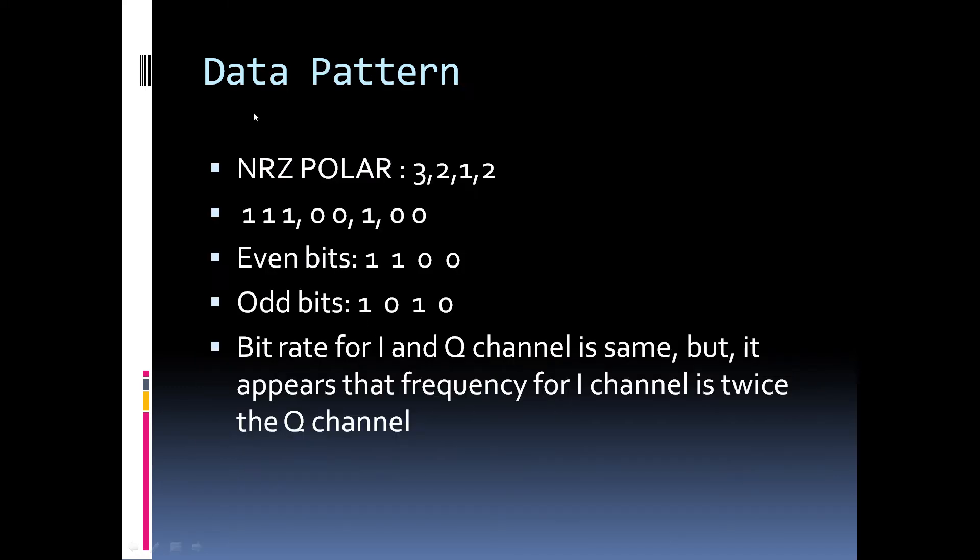Throughout the demo of QPSK, I have kept the data block switch in 8-bit position and it generates a fixed pattern with NRZ polar line coding in 3, 2, 1, 2 format. So, here first 3 bits are binary 1, then the next 2 bits are binary 0, then a single bit which is binary 1 and then again 2 binary 0. And hence, for brevity, I refer to them as 3, 2, 1, 2.